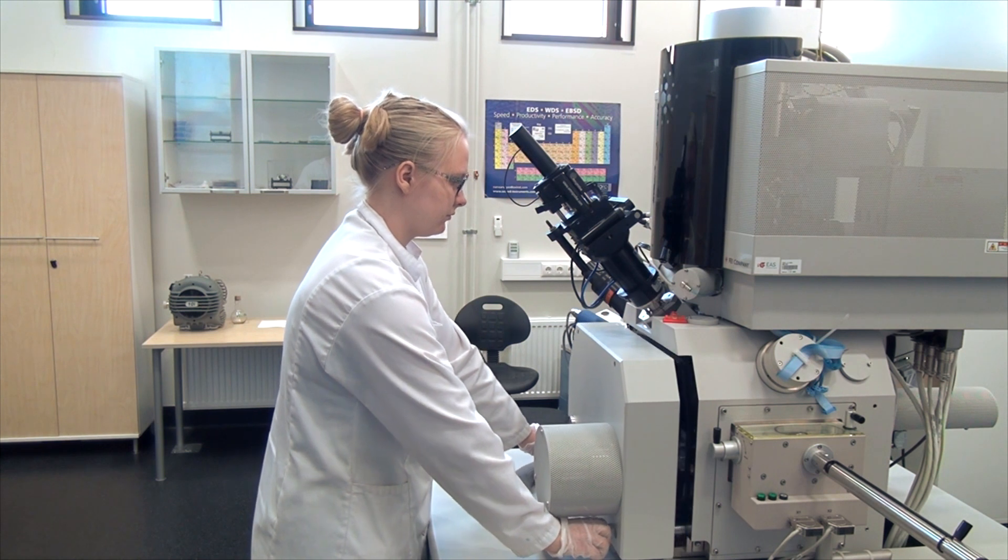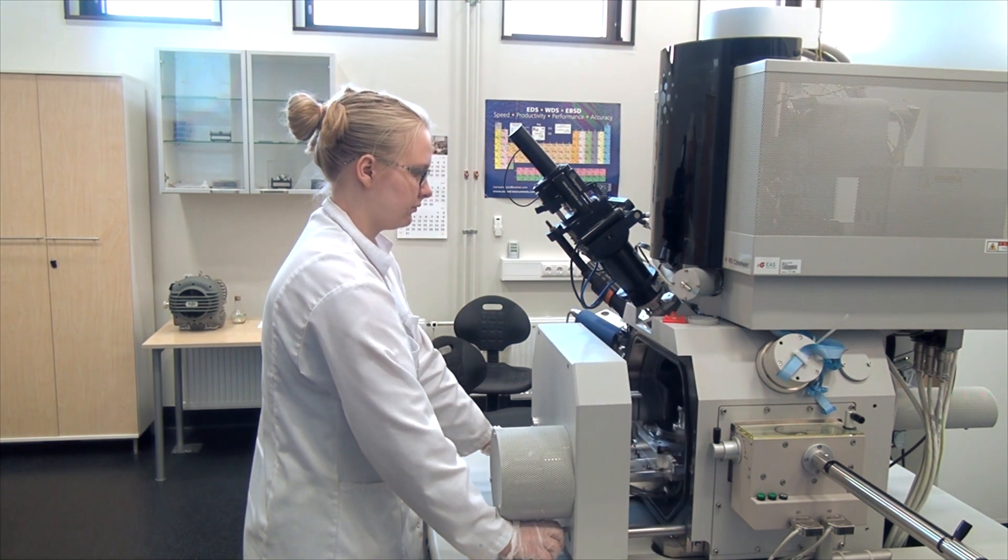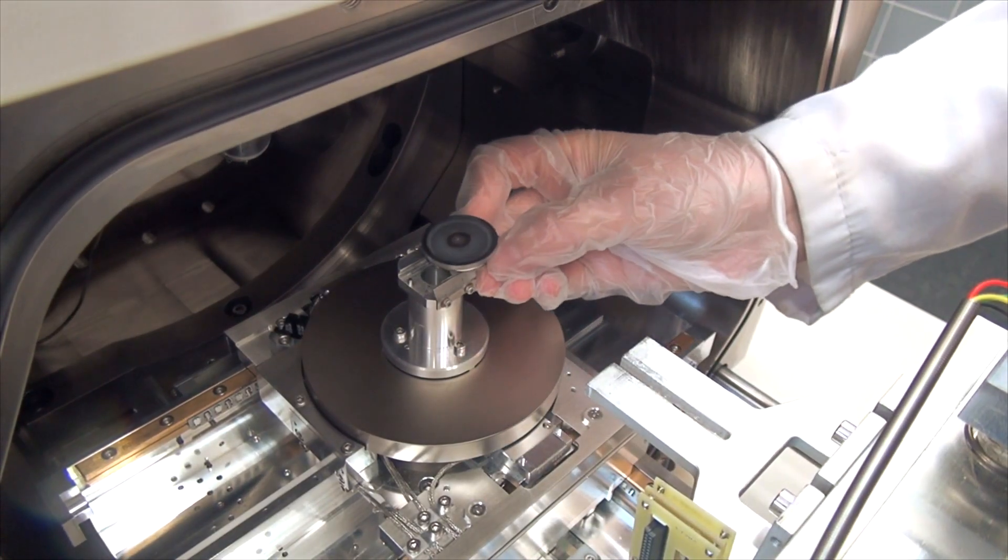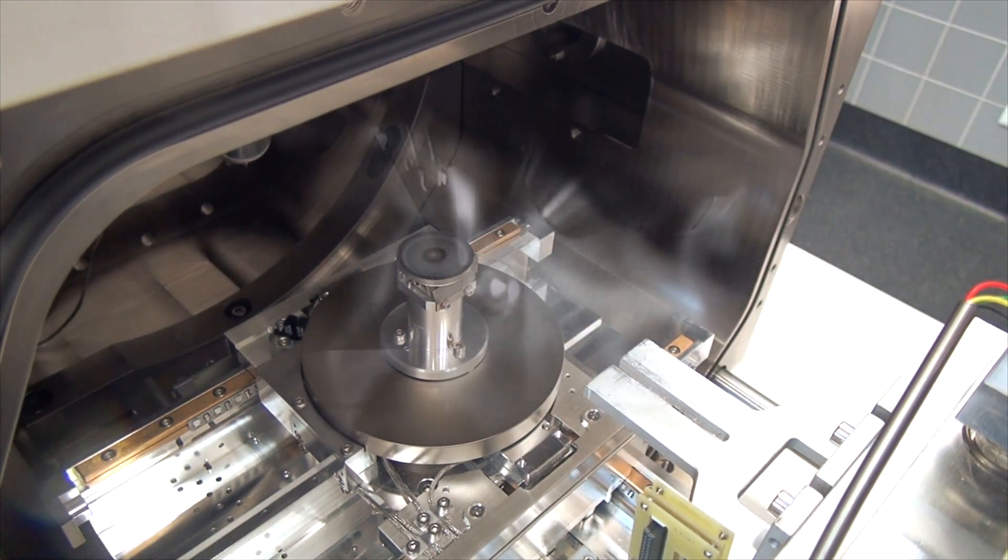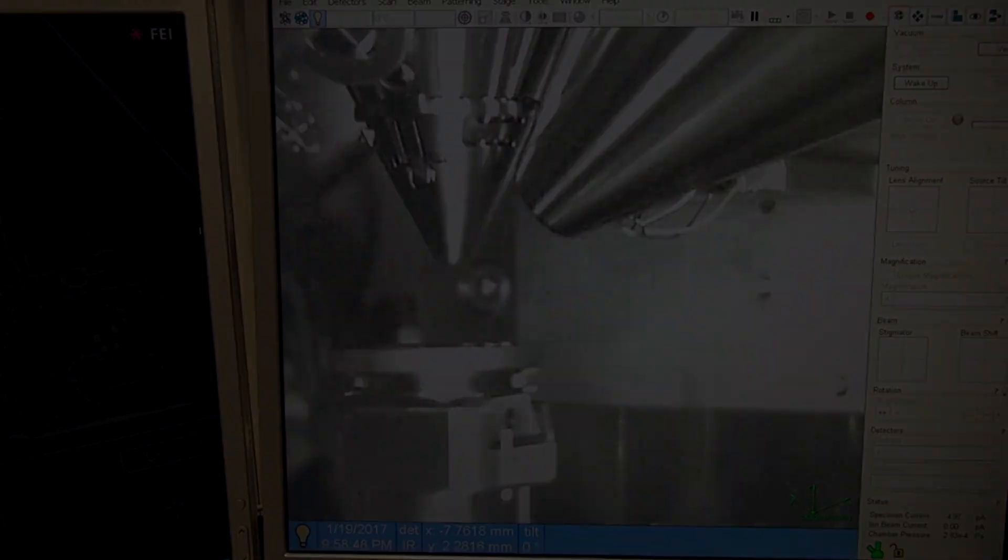Our current sample is too big to be inserted into the microscope through the airlock, and therefore, we will use the main door instead. Now that the level of vacuum is sufficiently high in the chamber, we can start our studies.